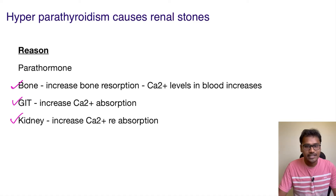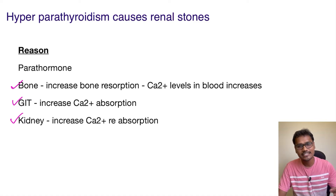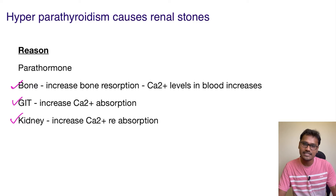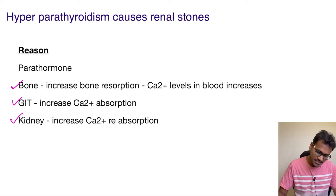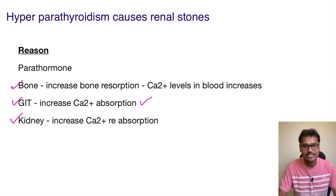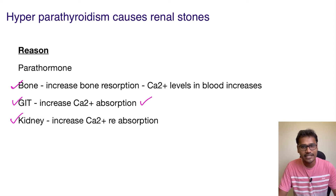In the bone, parathormone increases bone resorption and deposits this calcium into the blood — it is basically bringing calcium levels from the bone to the blood. In the gut, it causes an increase in reabsorption of calcium.